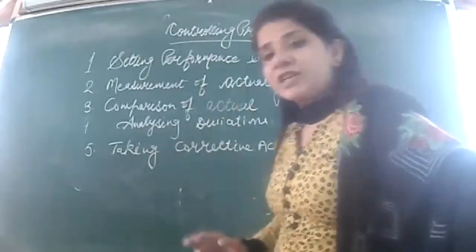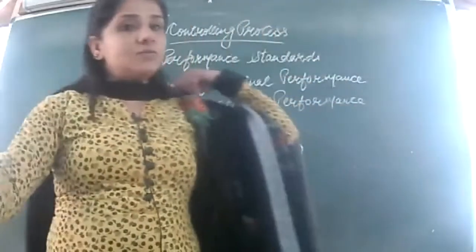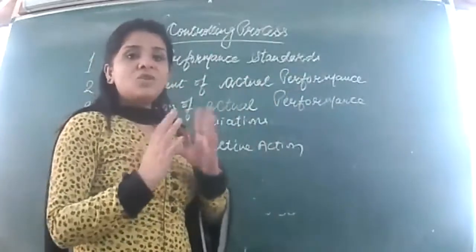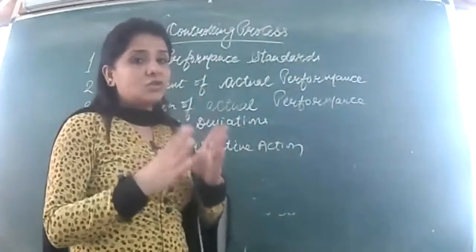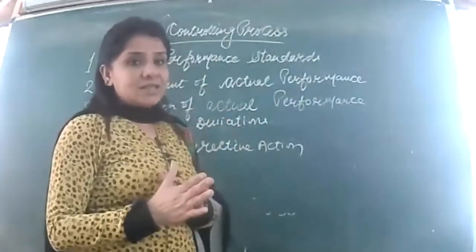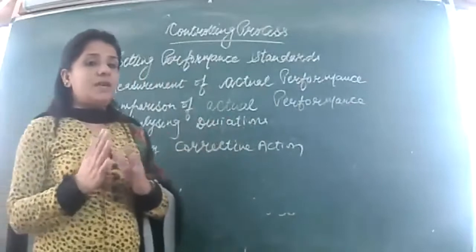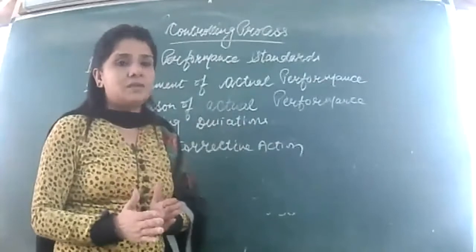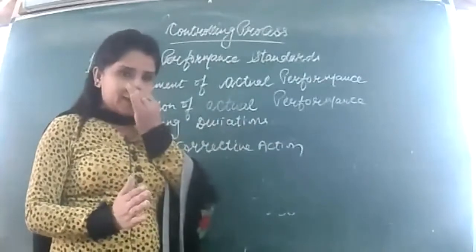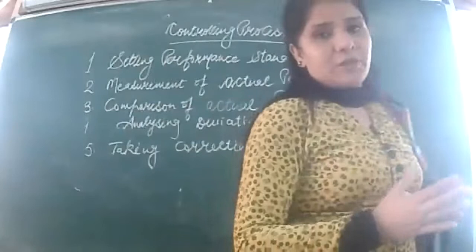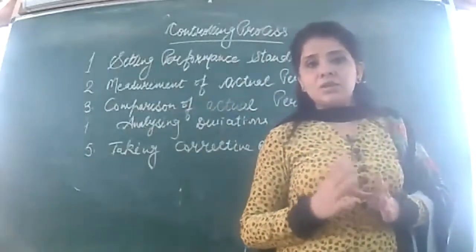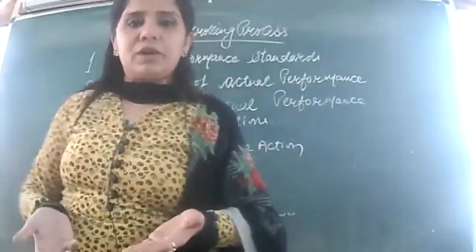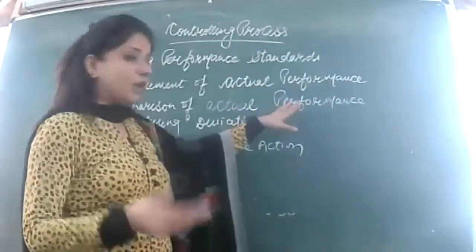For different departments, different standards you have to fix, and your standards should be understandable — there should not be any ambiguity or lack of clarity. They should be presented in quantitative terms. We have to express the standards in numerical terms so that employees can get an idea of how much is actually being expected from them. You have given them standards, they started working — you just need to check what they are actually doing.